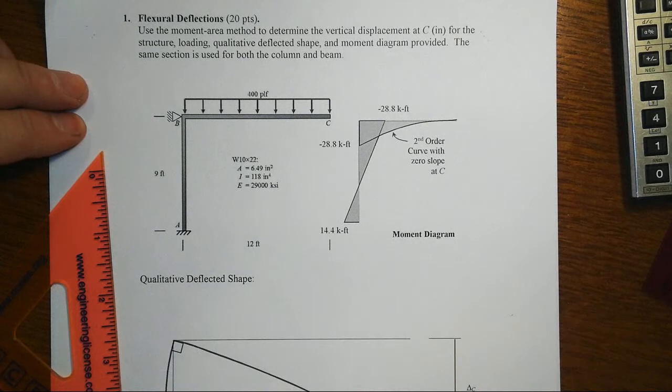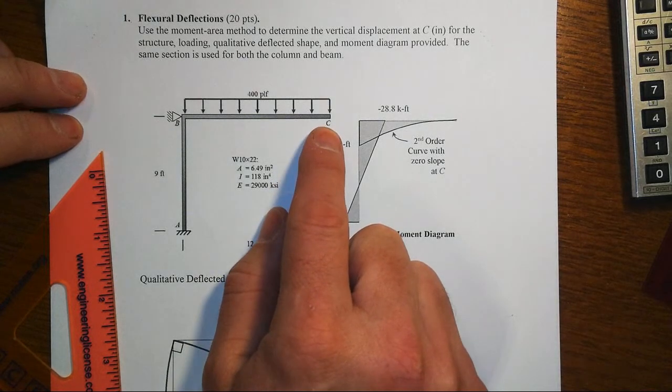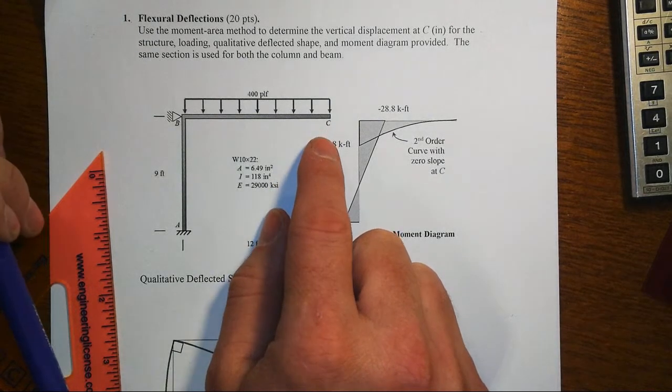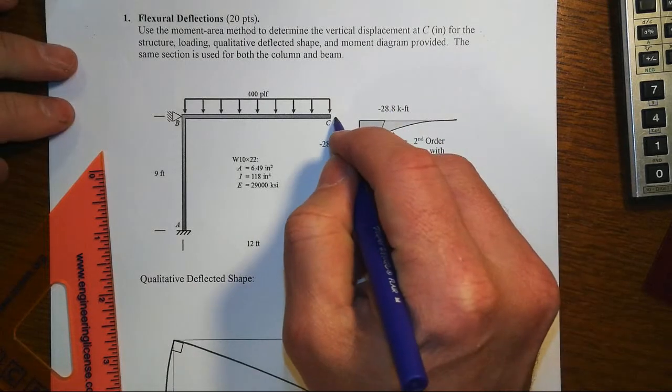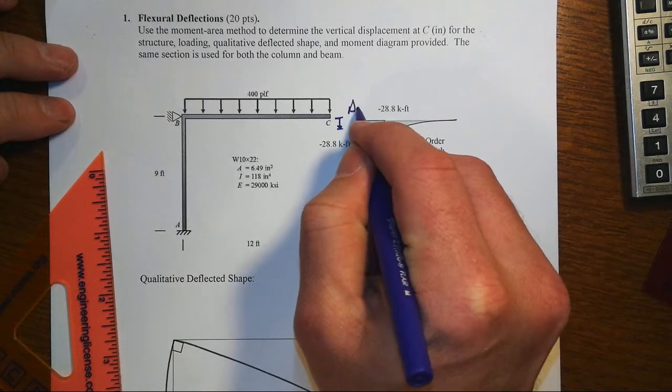All right, in this first item we're asked to find the displacement out here at the tip of the cantilever, delta C.